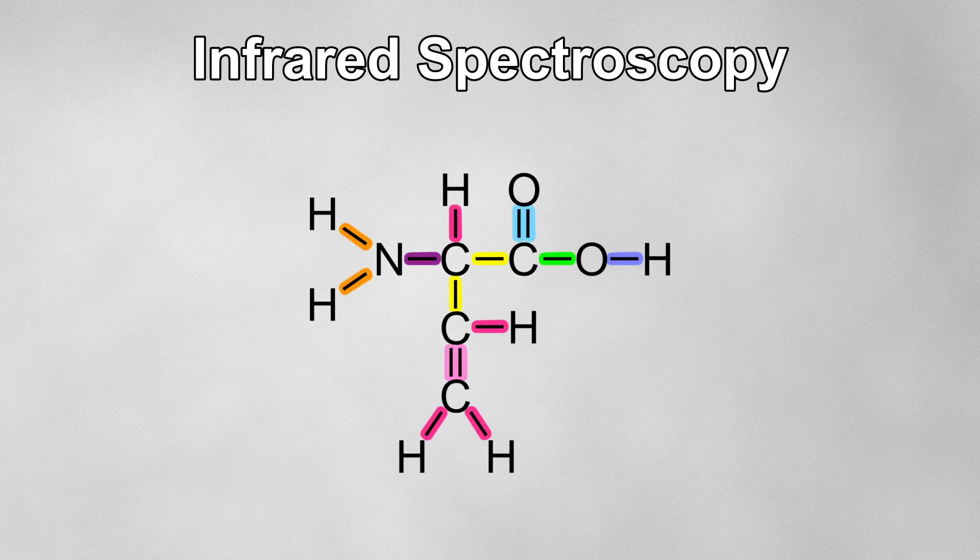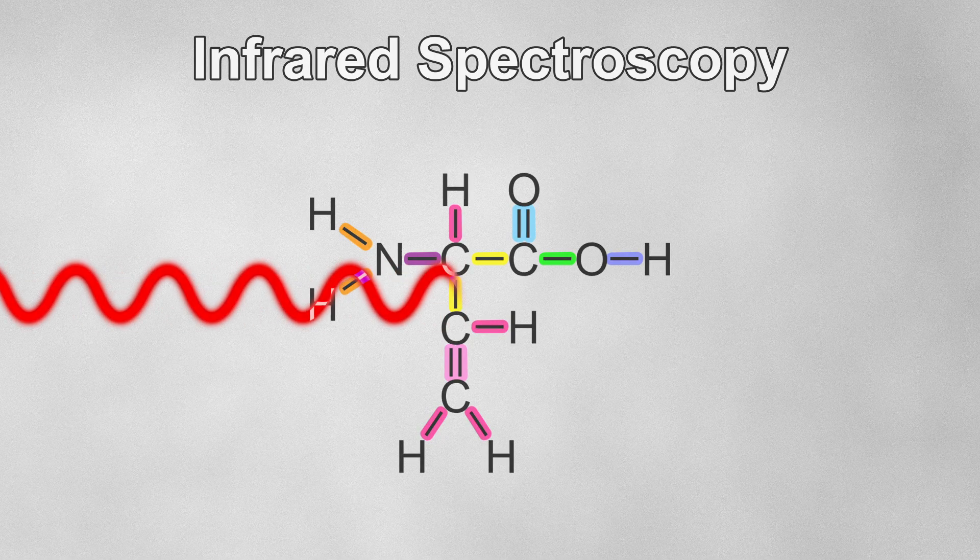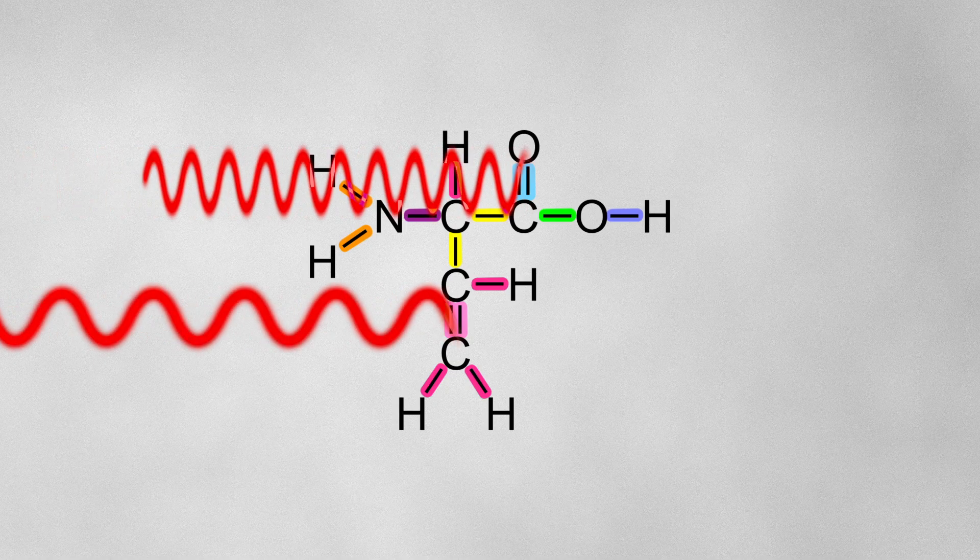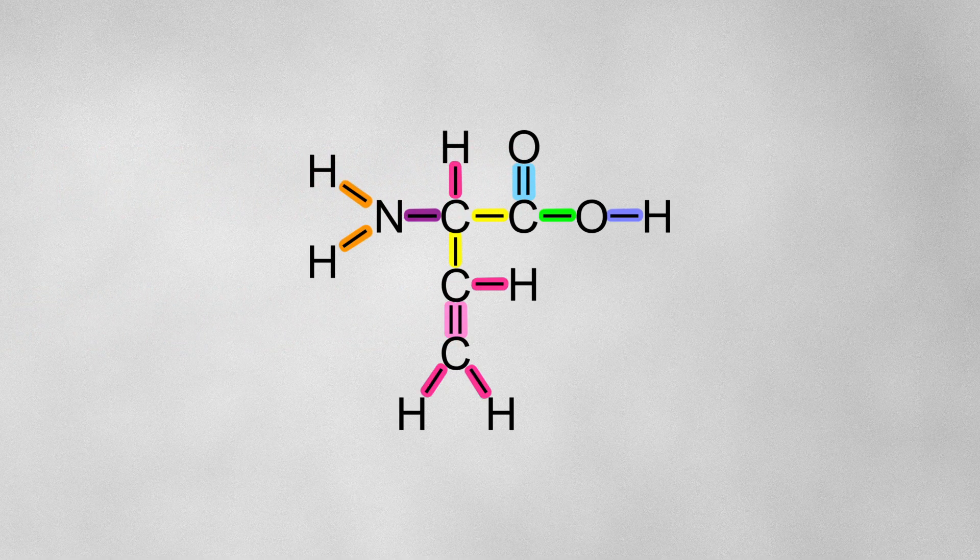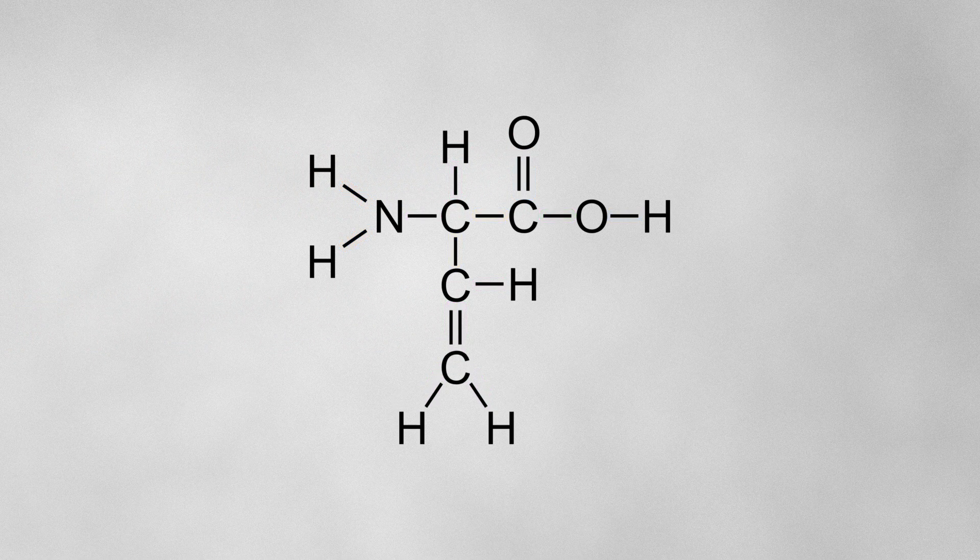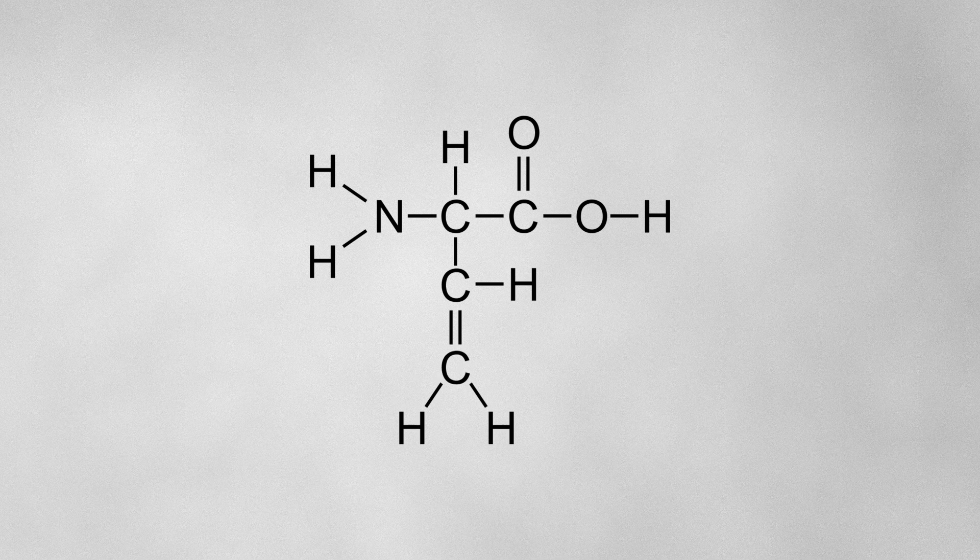This is because covalent bonds can absorb infrared radiation. Just like visible light, infrared radiation has a spectrum with a range of frequencies. Different types of bonds absorb different frequencies of infrared, causing them to vibrate. Some bonds actually don't absorb infrared at all, but we'll come on to why that is later in the video.